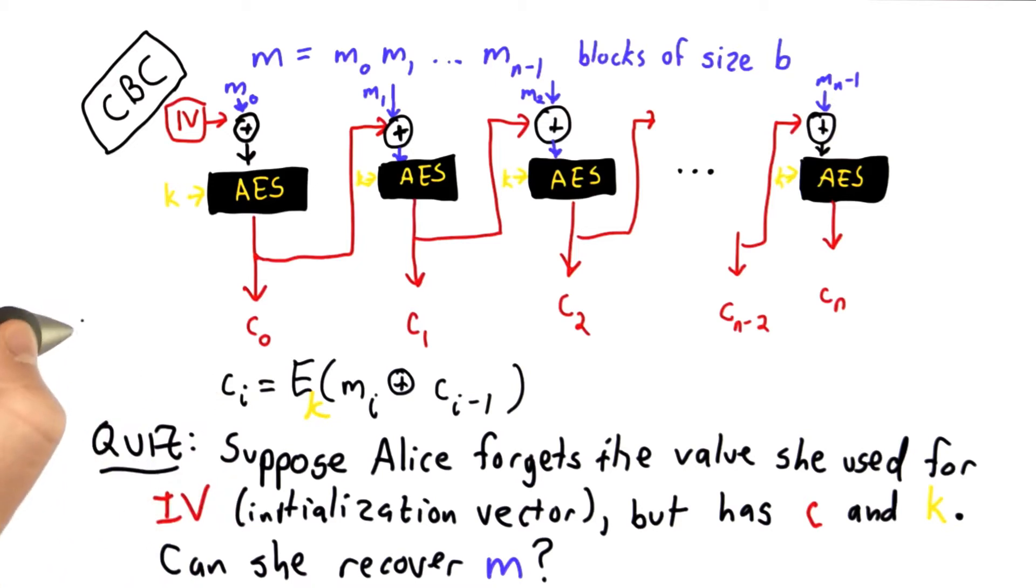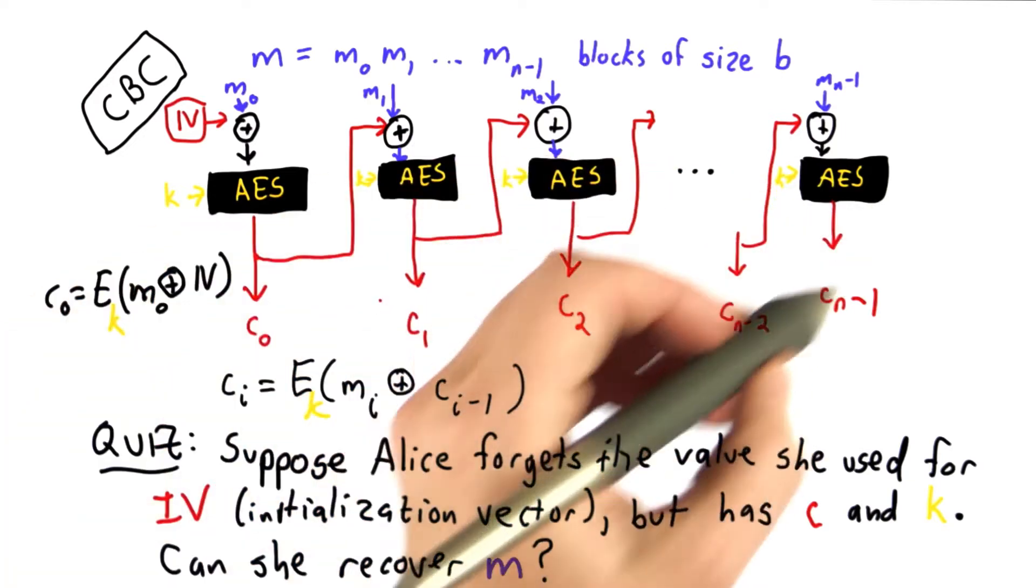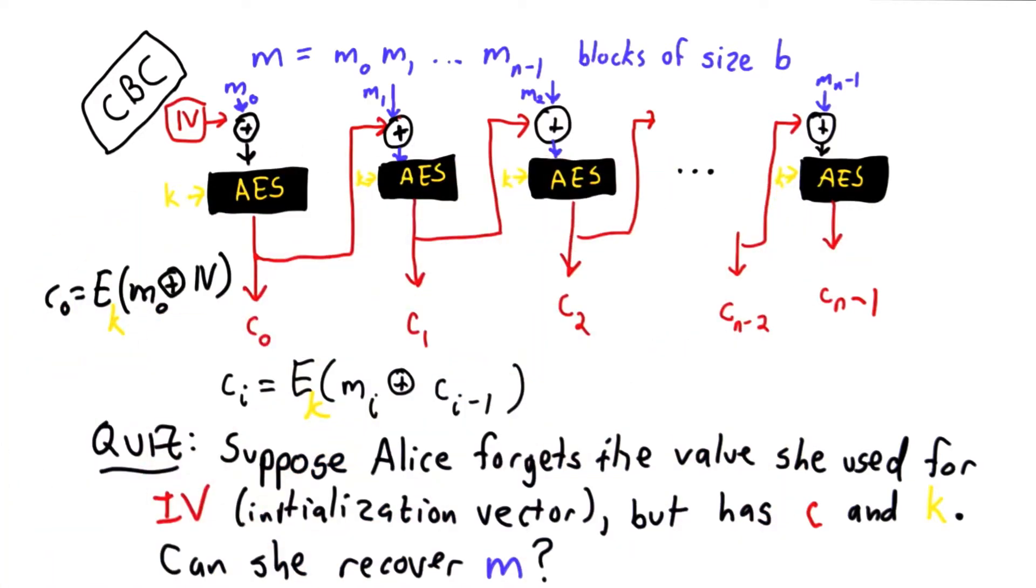The exception to that is block c0, where that's the value of encrypting m0 XORed with the IV. So we didn't explain how to do decryption, but from the way the encryption was, you should be able to figure that out.